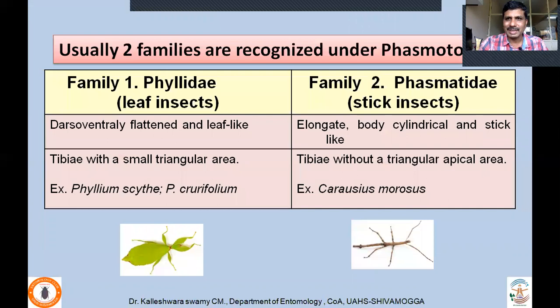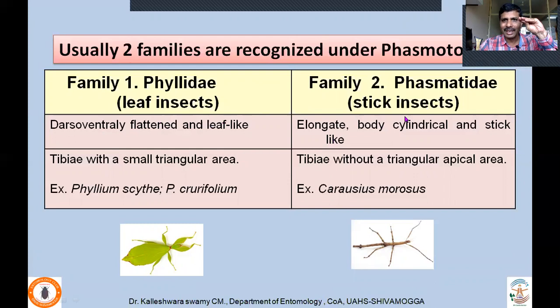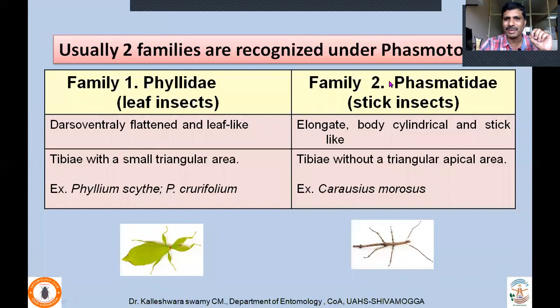Two families are recognized under order Phasmatodea: Phyllidae and Phasmatidae. Phyllidae includes leaf insects; Phasmatidae includes stick insects. The distinguishing character: Phyllidae — leaf insects — are dorsoventrally flattened and leaf-like, whereas stick insects are elongate with a cylindrical body, very elongated and stick-like. In Phyllidae, the tibia has a small triangular area which is absent in Phasmatidae — that is how you can distinguish these two families.